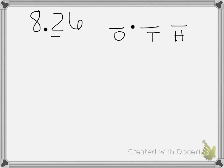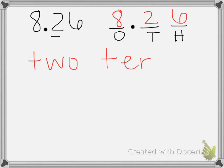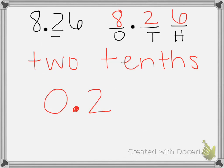Here is 8 and 26 hundredths, and we want to know the value of the 2. Since the 2 is in the tenths place, it's going to have a value of 2 tenths. To show that with numbers, we need to write the number 2 tenths. So a zero goes in the ones, then a decimal point, and then 2 in the tenths place. That would be the number 2 tenths.